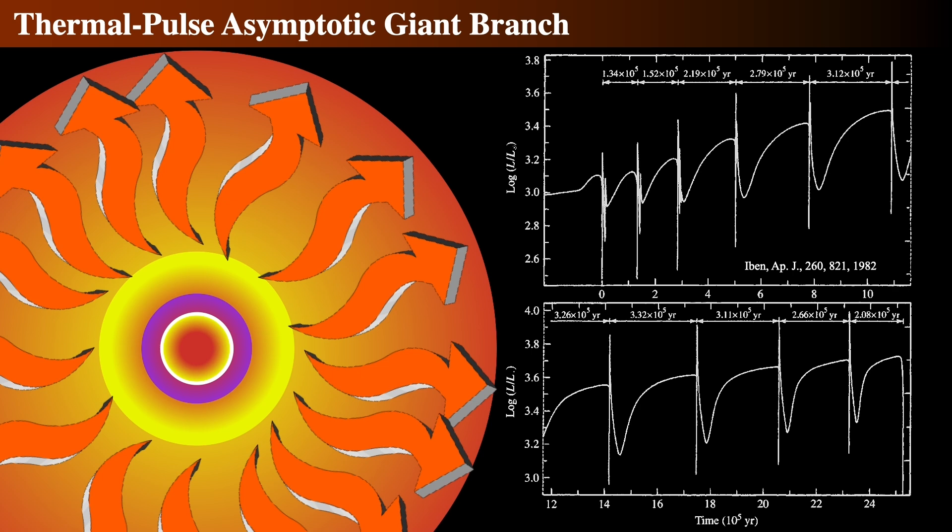The graph that you're looking at comes from a simulation for a star with about 60% of the mass of the Sun, and it comes from a 1982 astrophysical journal article written by Ikko Ibn, a pioneer for such stellar interior modeling. It details the luminosity as a function of time. This sequence for a low-mass star lasts about two and a half million years. You can clearly see the effect of the flash radically increasing the luminosity, followed by a sharp drop in luminosity, which are the spikes in the graph.